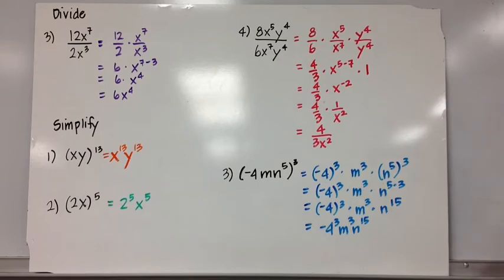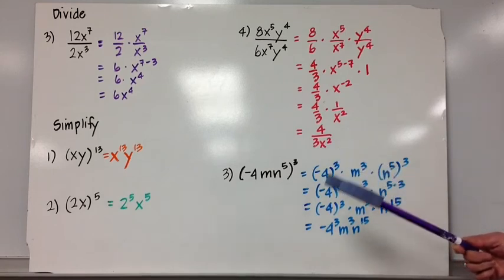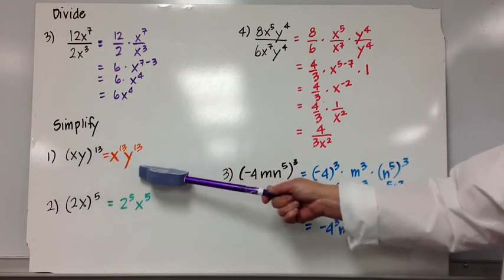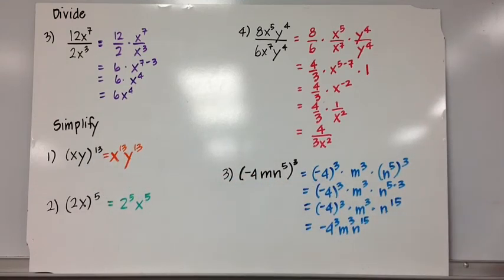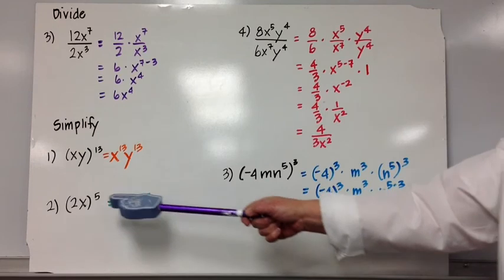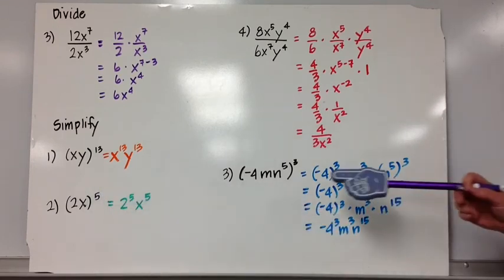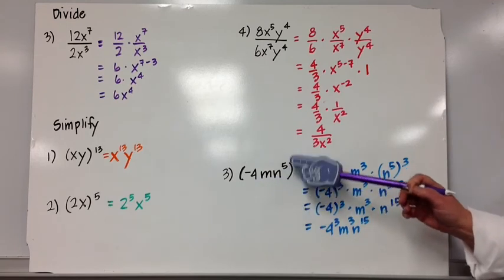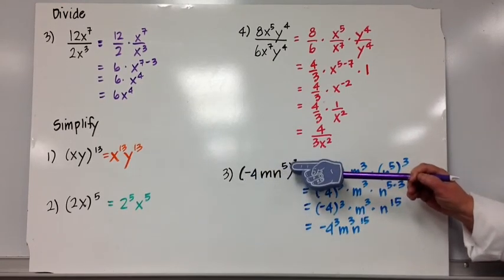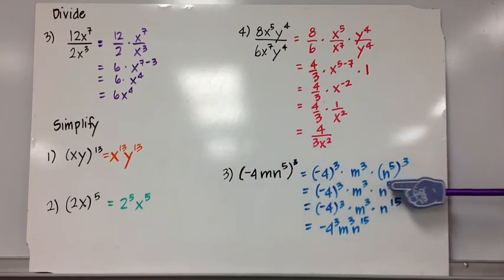Let's look at some simplifying. xy to the 13th power — everything in the parentheses is to the 13th power, so that's x to the 13th times y to the 13th. 2x all to the 5th power is 2 to the 5th times x to the 5th. One more: negative 4m to the 5th all raised to the 3rd power is the same as negative 4 to the 3rd power times m to the 3rd power times n to the 5th raised to the 3rd power.